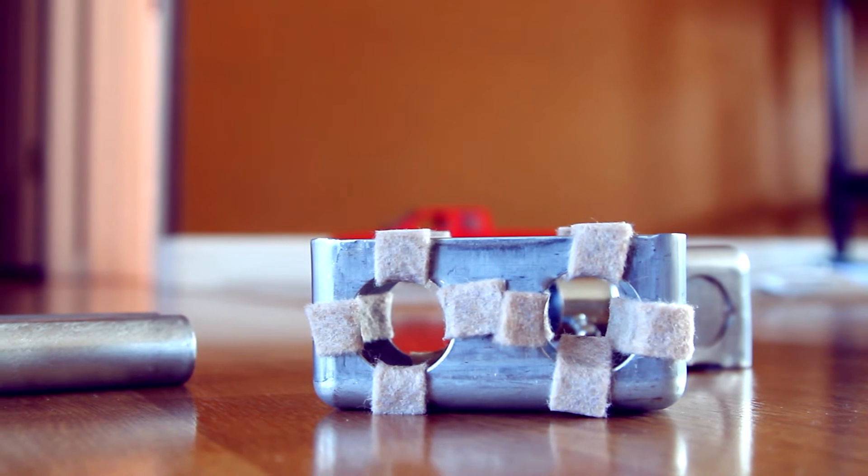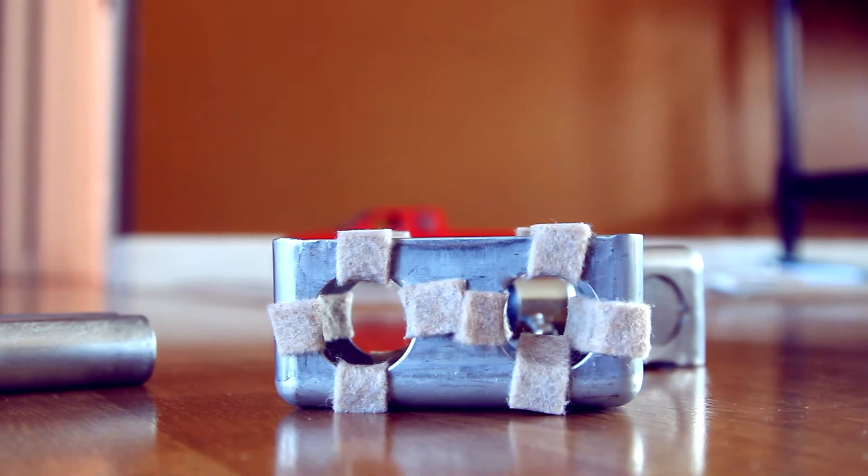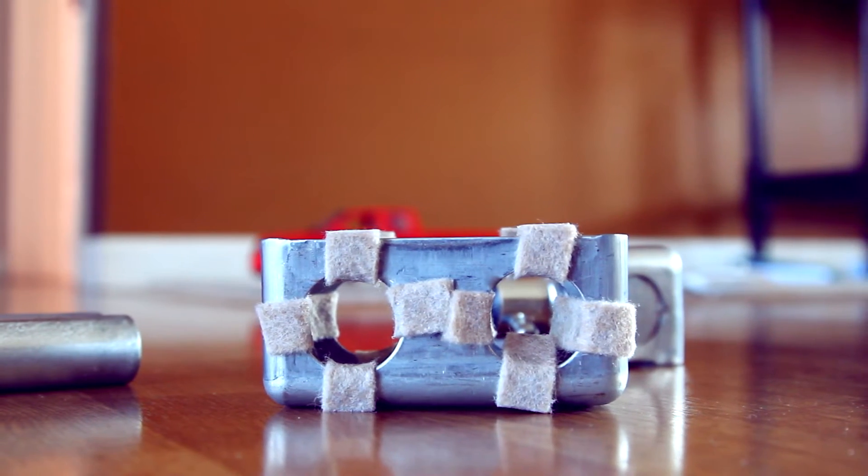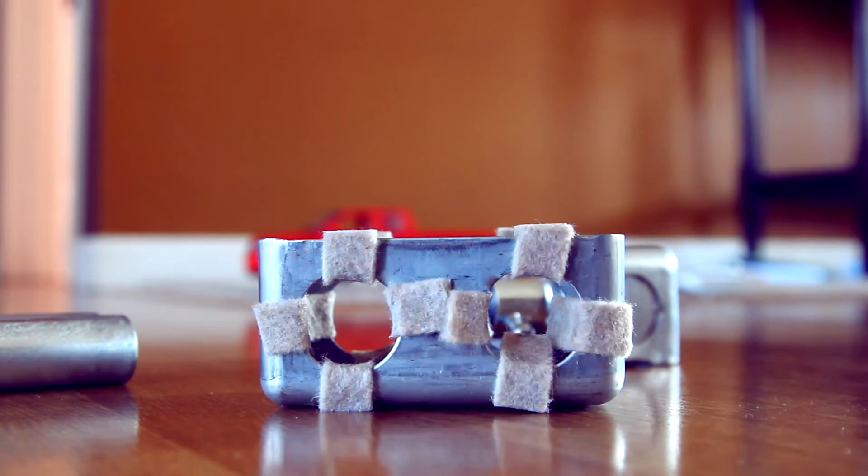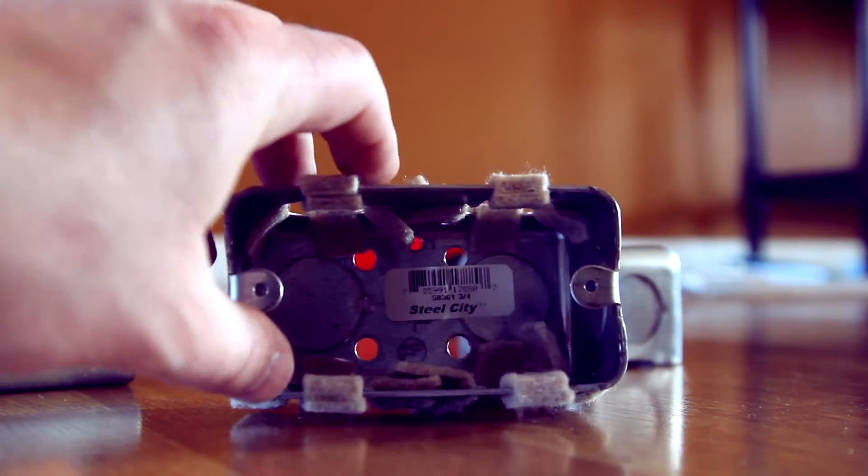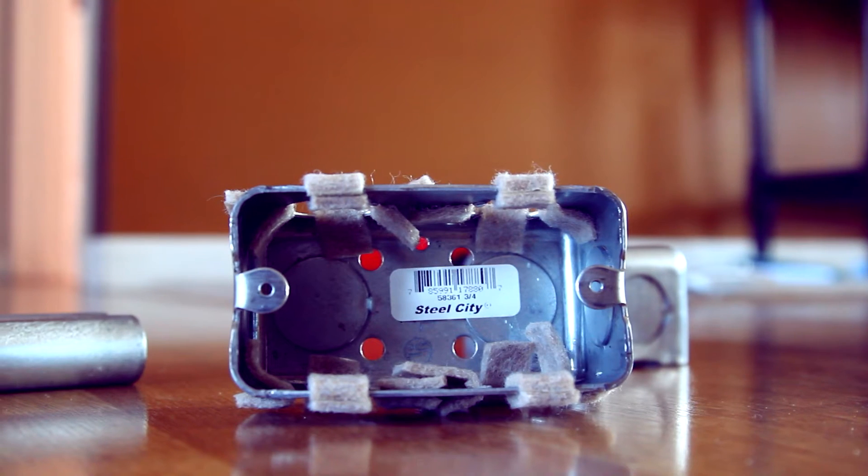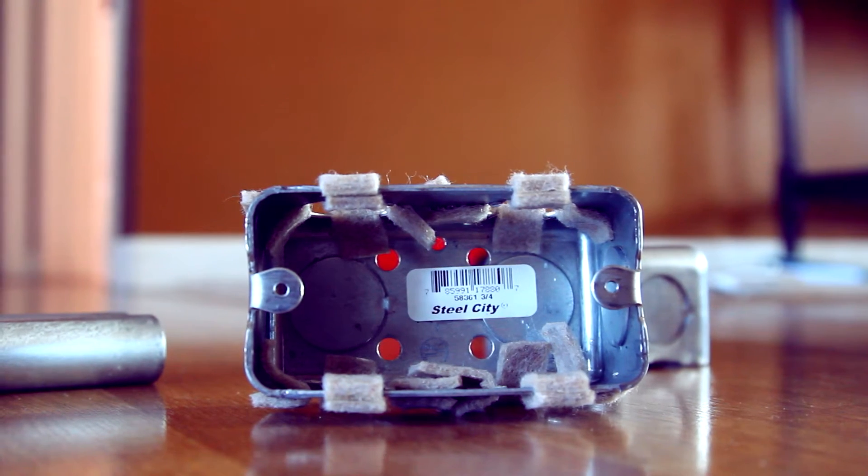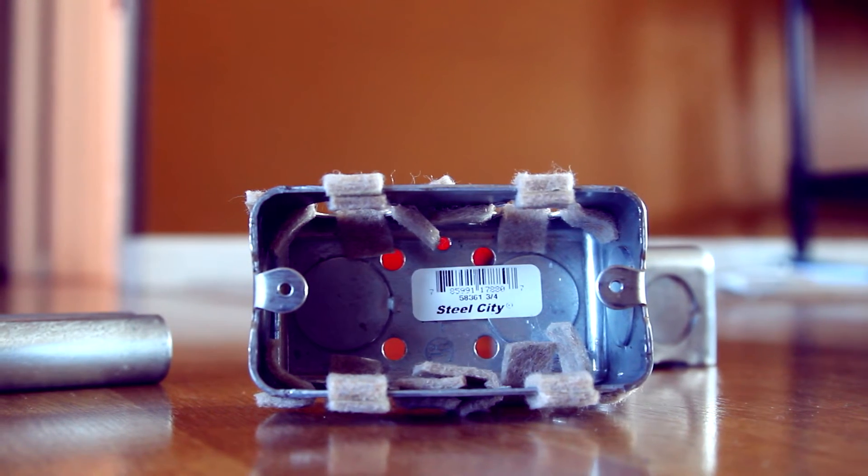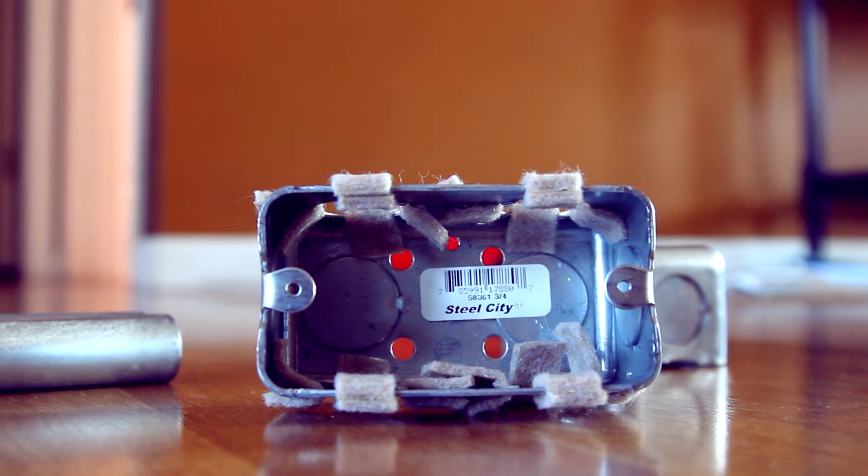This next electric outlet cover is going to be your slider and what you want to do is punch the holes out and then you want to get some felt. I got mine and it's just got sticky stuff on the back and just really cover those holes up as you can see here and that will help it slide a lot smoother.